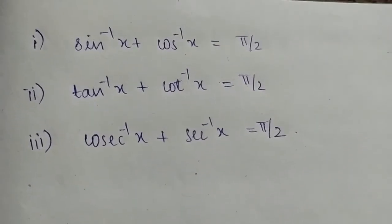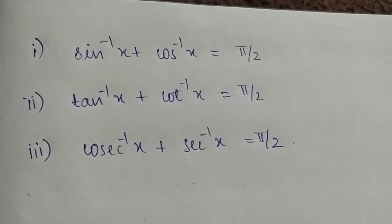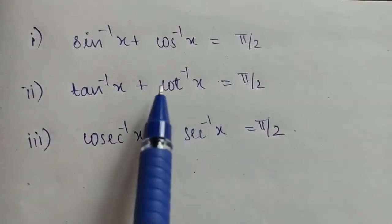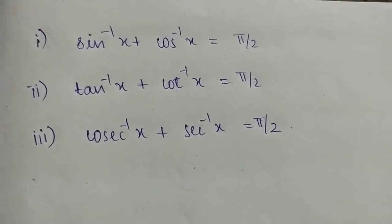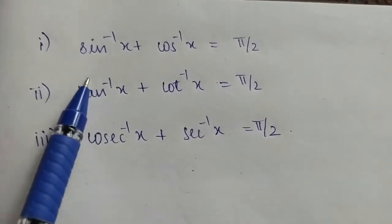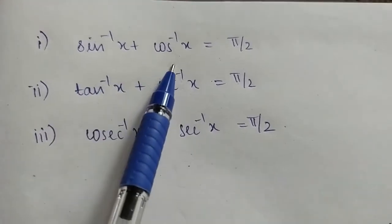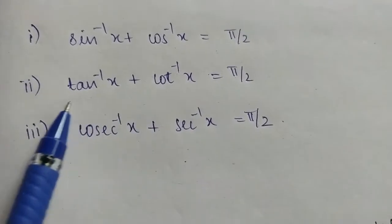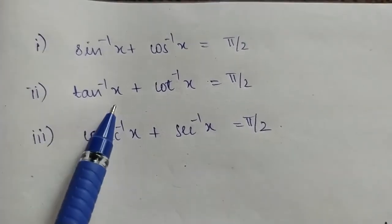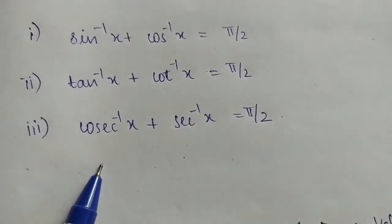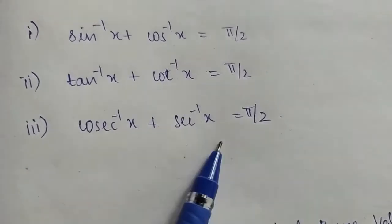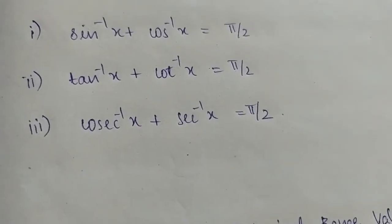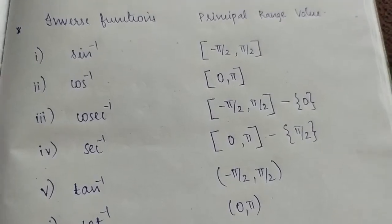In Trigonometry, we study sin² θ + cos² θ = 1. In the inverse, we have three properties. Sin inverse x + cos inverse x = π/2. Similarly, tan inverse x + cot inverse x = π/2, and sec inverse x + cosec inverse x = π/2. These all sum to π/2.